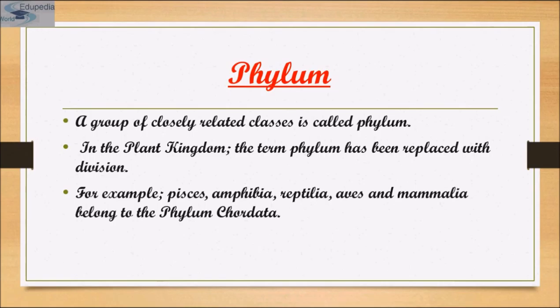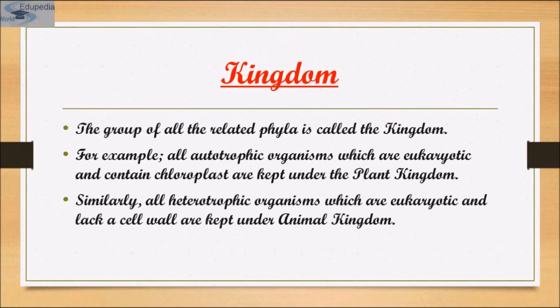In case of plants, classes with a few similar characters are assigned to a higher category called division. All animals belonging to various phyla are assigned to the highest category called Kingdom Animalia, which we have already studied in the classification of animals. Kingdom Plantae comprises all plants from various divisions.